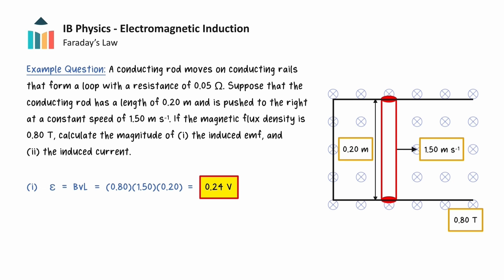To determine the induced current, recall the equation that relates the resistance of a conductor to the potential difference across it and the current through it. Through rearrangement of this equation, we can find the induced current from the values of the induced EMF, 0.24 volts, and the resistance of the loop, which is given as 0.05 ohms. So we find that the induced current is equal to 4.8 amps.